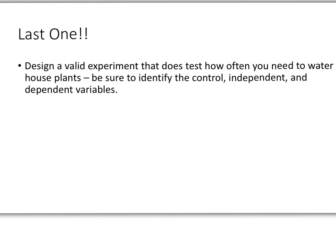Alright. Well, here's the last one, and I want you to do this. I want you to design a valid experiment that does test how often you need to water house plants. And be sure that you have in your experiment a control, independent variable, and dependent variable. You also need to make sure that you have some constant things for those plants, things that don't change so that you can actually measure if water is the thing affecting the plants. Take a little bit of time right now and design your little experiment. And we'll be discussing that one as well when you come back to class. Thanks for tuning in, and I hope you have a great day.